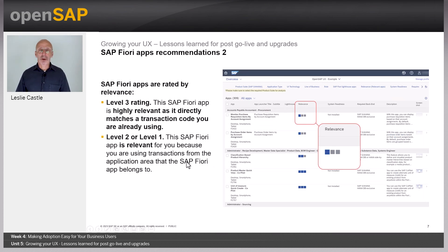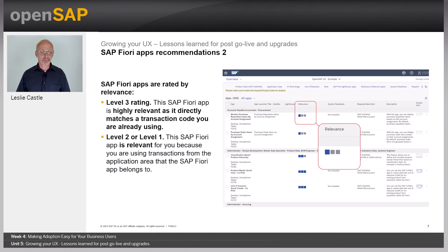In this next slide, I'll be looking at the output of the SAP Fiori Apps Recommendations tool. SAP Fiori apps are rated by relevance. A level 3 rating means the SAP Fiori app is highly relevant as it directly matches a transaction code you are already using. Level 1 or level 2 means the SAP Fiori app is relevant because you're using transactions from the application area that the SAP Fiori app belongs to.